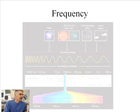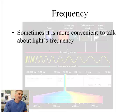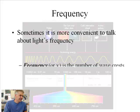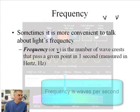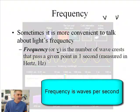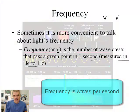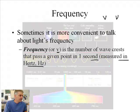Now frequency is an interesting concept to grasp. Sometimes it's more convenient to talk about a light's frequency than its wavelength. Frequency, another symbol, scientists keep using these Greek letters. They're going to use this funny-looking V, the Greek symbol nu. It's like a little curvy V. It's the number of wave crests that pass a given point in one second. It's measured in units called a hertz, or Hz.